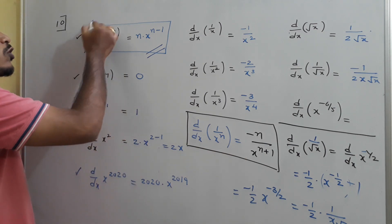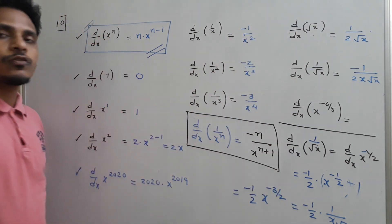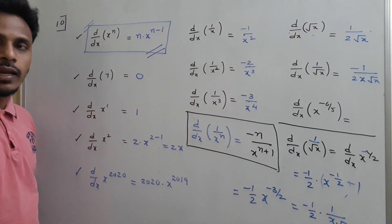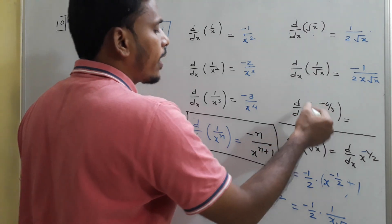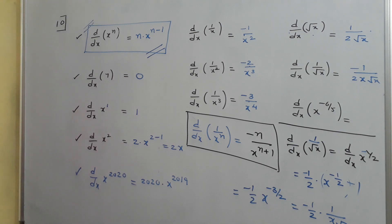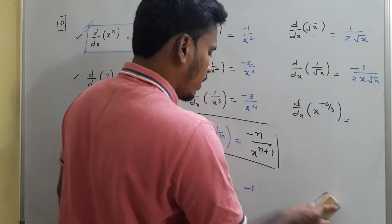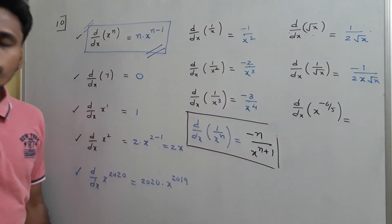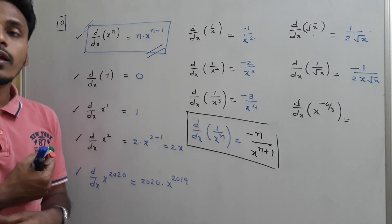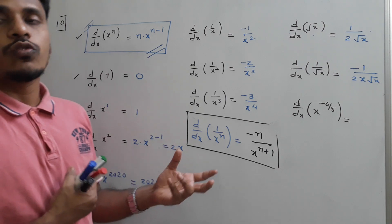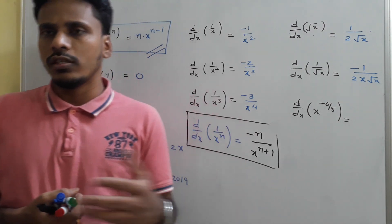It is helpful to memorize the formula d/dx of x^n, as well as the derivatives of √x and 1/√x directly. For any function like d/dx of x^(-6/5), just replace n with -6/5 to get your answer. In this class we will solve problems using standard derivatives along with the product rule, summation rule, and chain rule.